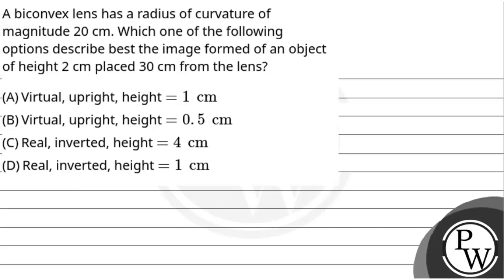Hello, let's read this question. The question is: a biconvex lens has a radius of curvature of magnitude 20 centimeters. Which of the following options describes best the image formed of an object of height 2 centimeters placed 30 centimeters from the lens? Four options are given.